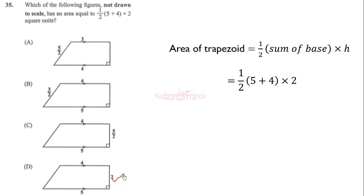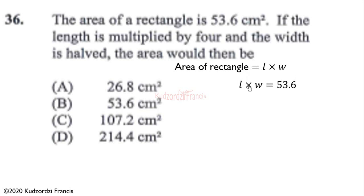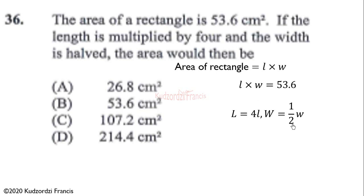Question 36: the area of a rectangle is 53.6 square centimeters. If the length is multiplied by 4 and the width is halved, what would the new area be? The area of a rectangle is length times width. If the new length is 4l and the new width is one-half w, we set up the new area as 4l times one-half w.